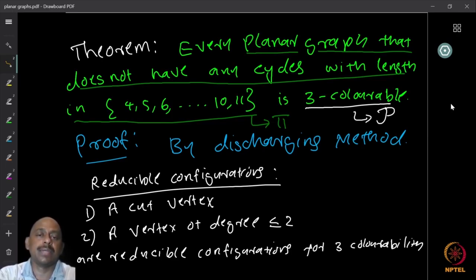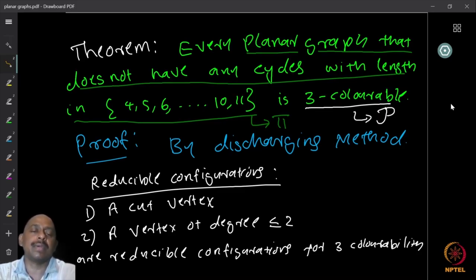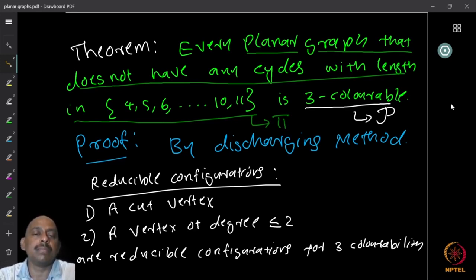We start with a set of reducible configurations. For three-colorability, I claim that a cut vertex and a vertex of degree less than or equal to two form a set of reducible configurations. This means no minimum counterexample to three-colorability can contain cut vertices, and no minimum counterexample can contain vertices of degree less than or equal to two.